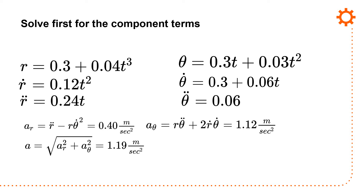For the acceleration, I have to remember all the terms. Acceleration R is R-double-dot minus R times theta-dot², which equals 0.4 meters per second squared. Acceleration theta is R times theta-double-dot plus 2 times R-dot times theta-dot, which equals 1.12 meters per second squared. Calculating the total magnitude — square root of A_R² plus A_theta² — gives 1.19 meters per second squared.